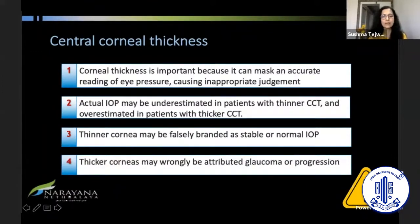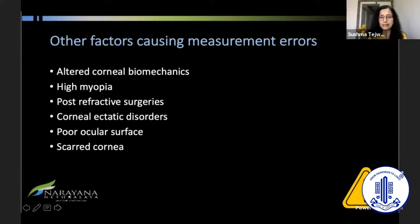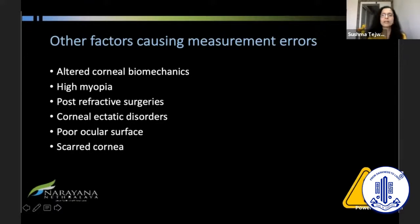That is a point of caution when deciding about target IOP. Other factors can also affect IOP measurement, such as altered corneal biomechanics due to corneal ectatic disorders, post-refractive surgeries, and high myopic patients where scleral rigidity is compromised. Also, if you have a poor ocular surface, irregular cornea, or scarred cornea, pressure estimation with whatever tonometer may be impaired.